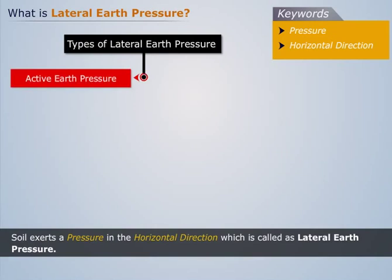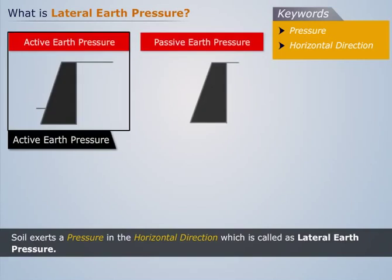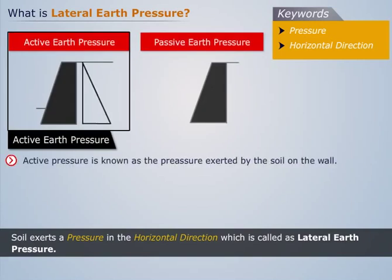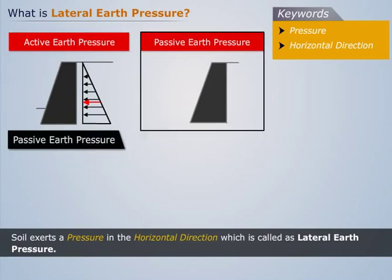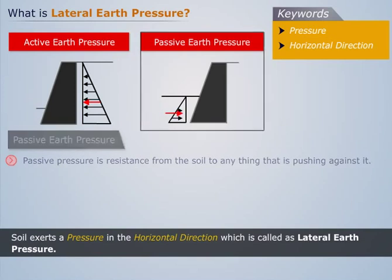Active earth pressure is known as the pressure exerted by the soil on the wall. Passive earth pressure is the resistance from the soil to anything that is pushing against it.